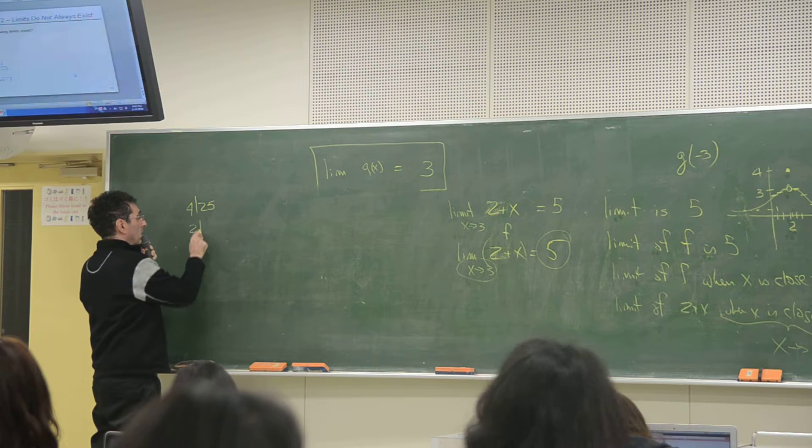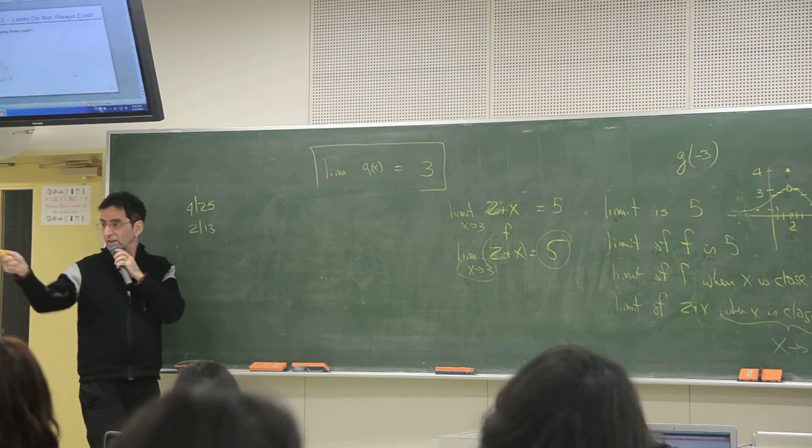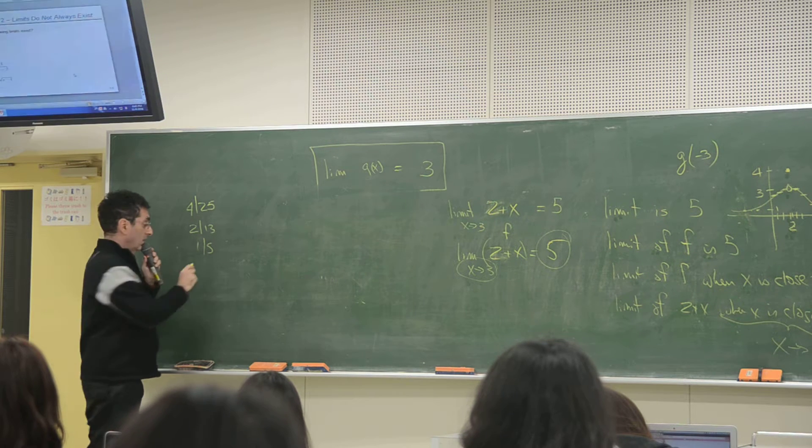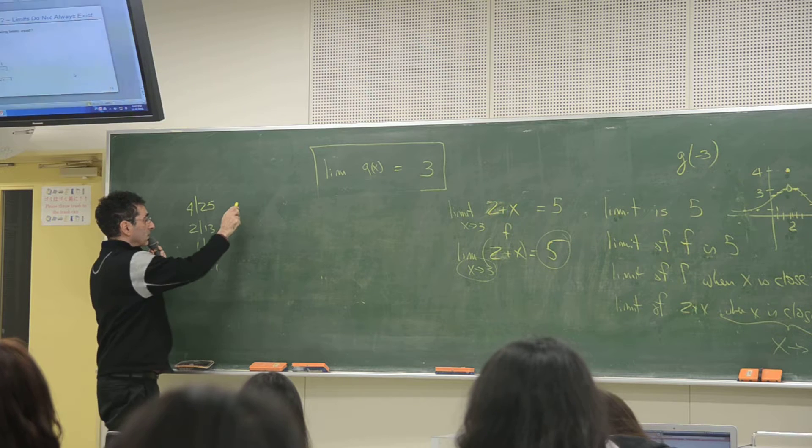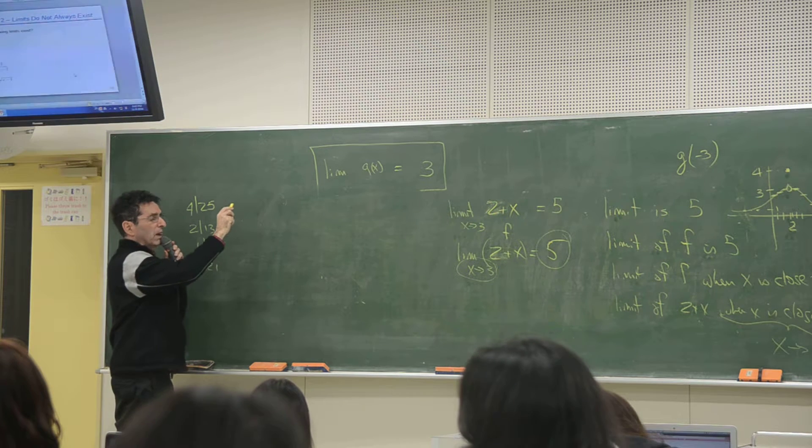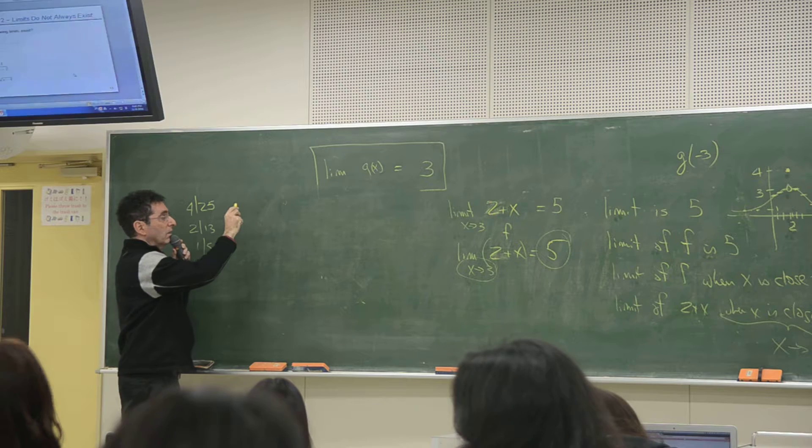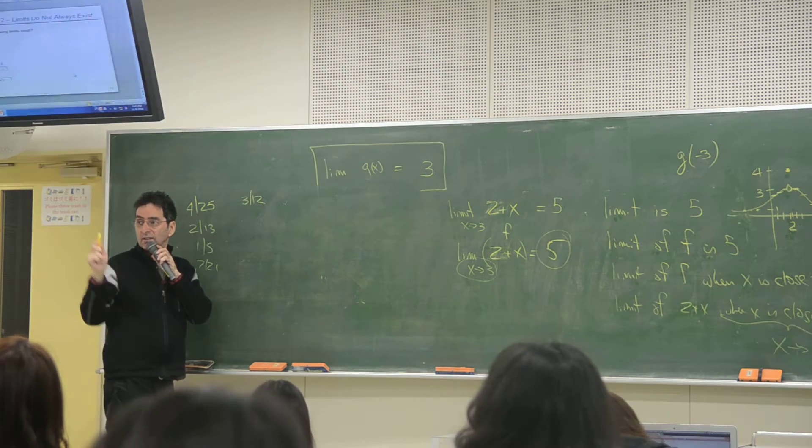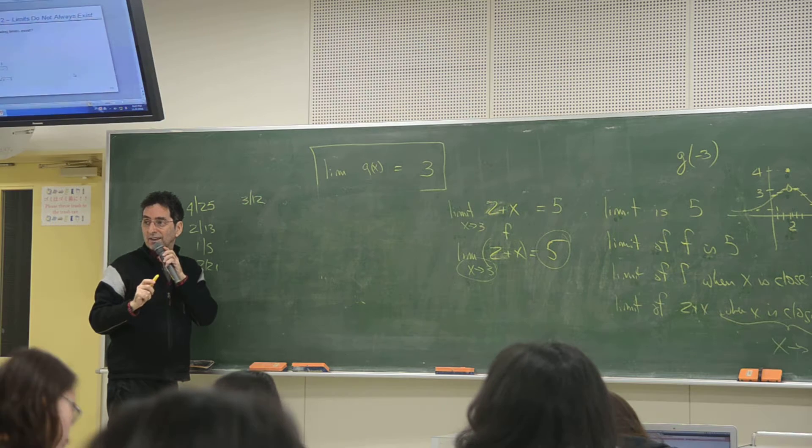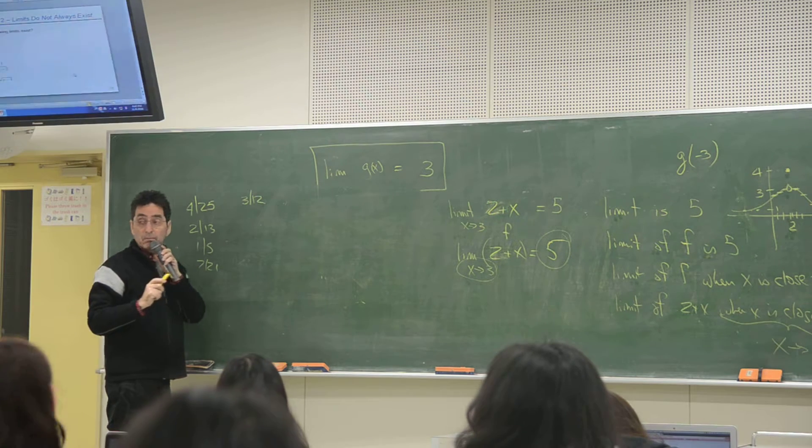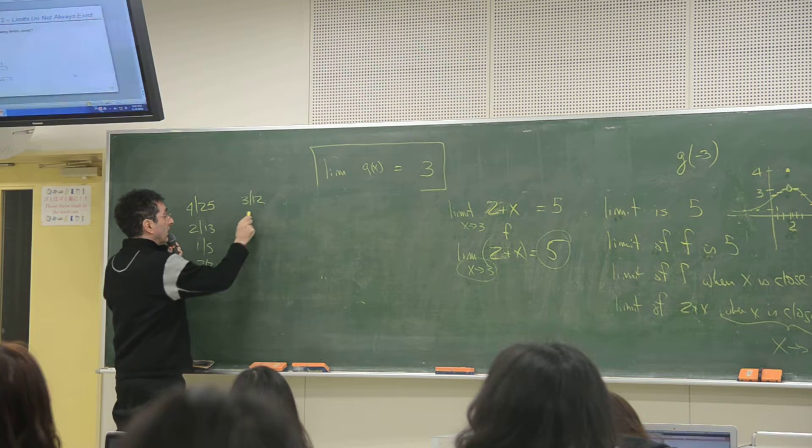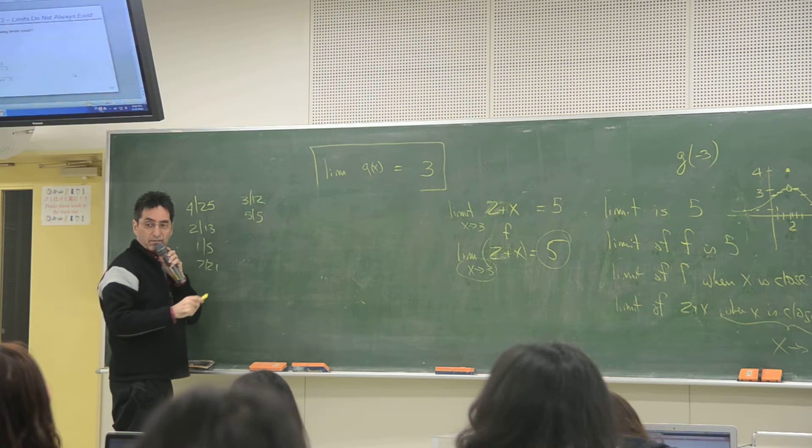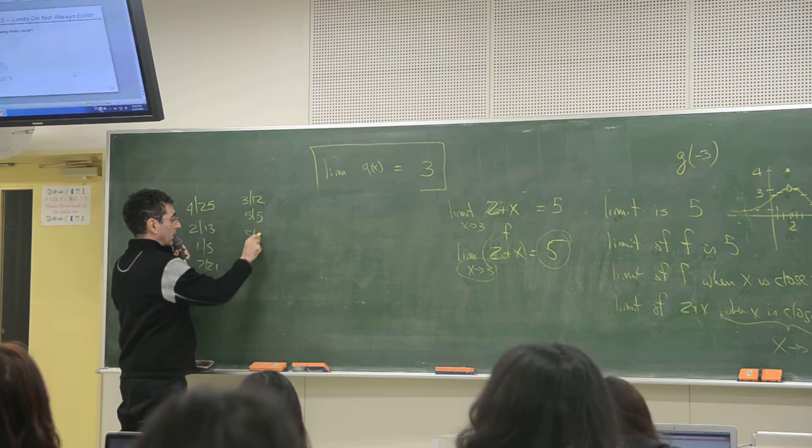Okay, so 2, 13, good. Next person. One, five. One, five. Next person. Seven, 21. Next person. Three, 12. Say it the other way. Three, 12. Next person. Five, five. Five, five.